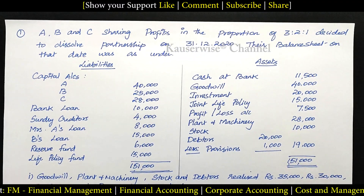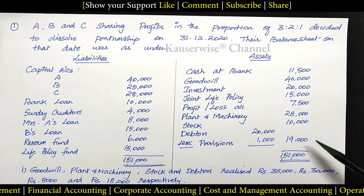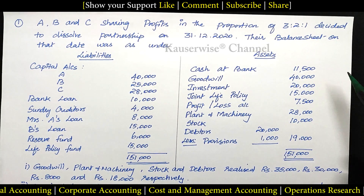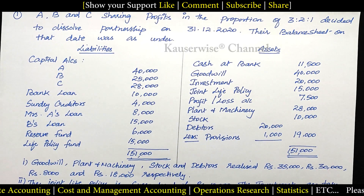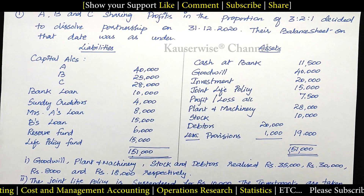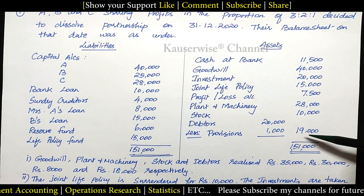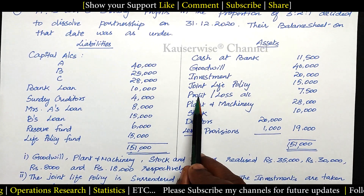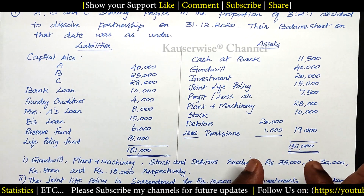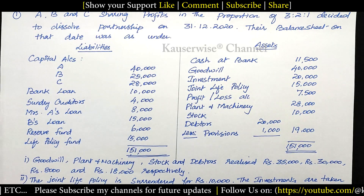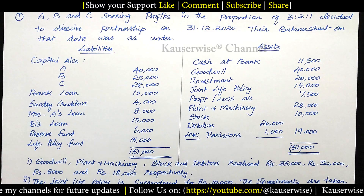The first step under dissolution is to transfer all assets to realization account, except for three things: cash or bank balance; the debit side of capital account, if any capital account appears under the asset side; and profit and loss debit side, which is a loss. Except these three things, we need to transfer all assets to realization account. Journal entry: Realization Account Dr. to all assets.